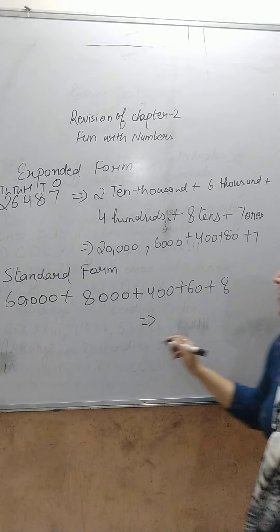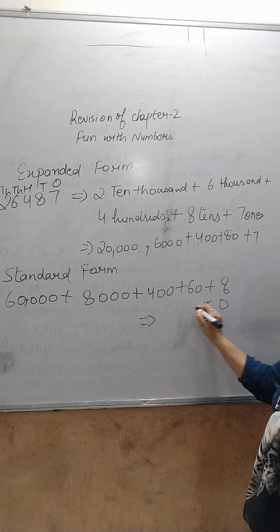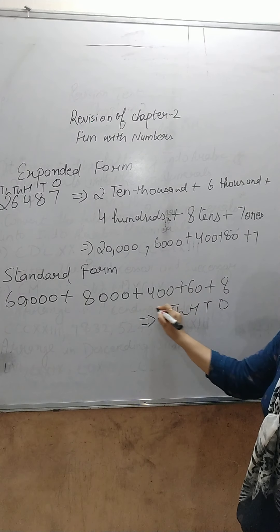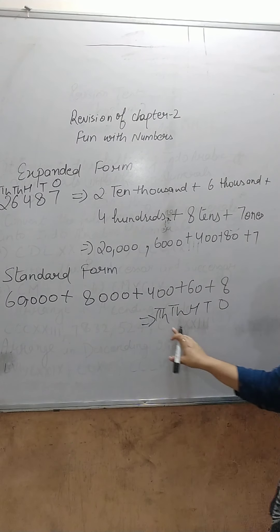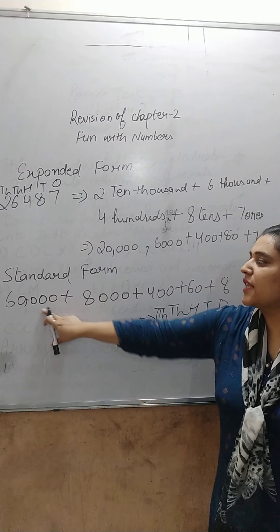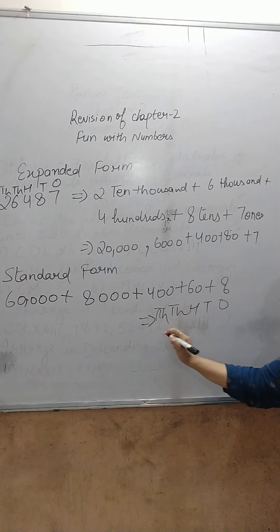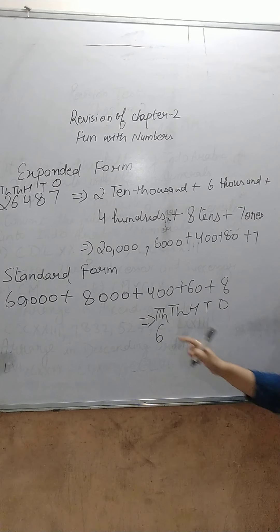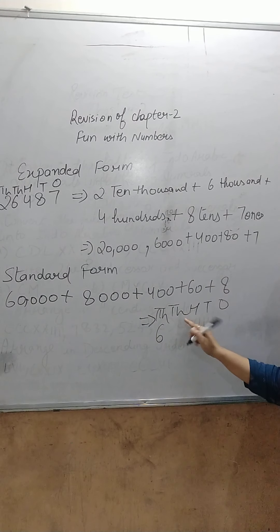Now, 60,000. First of all, write the place values: 1, 10, 100, 1,000, 10,000. 60,000 goes in the 10,000 place, so write 6 here. Then 8,000 is on the 1,000 place.